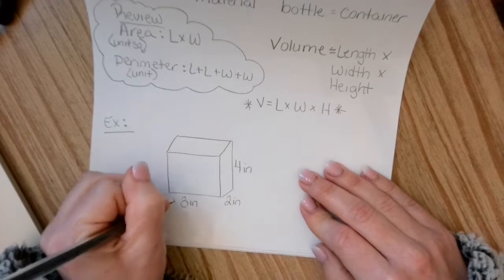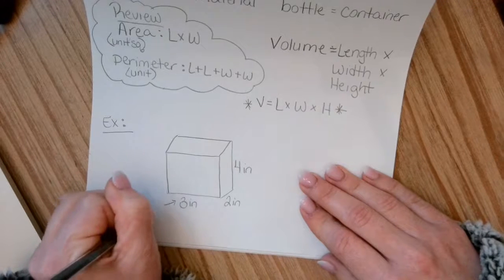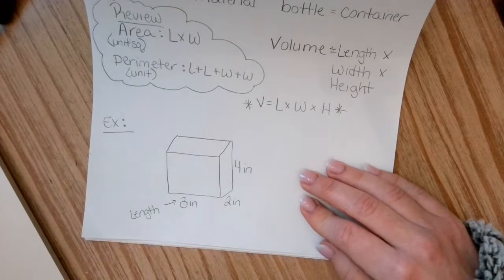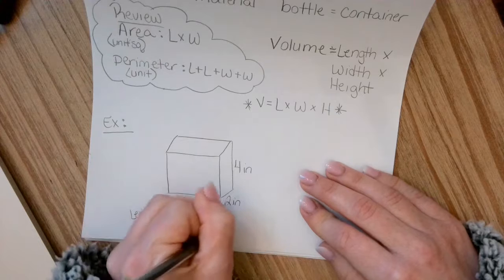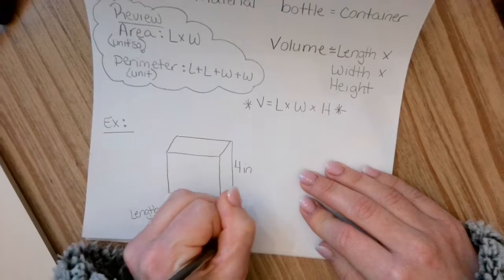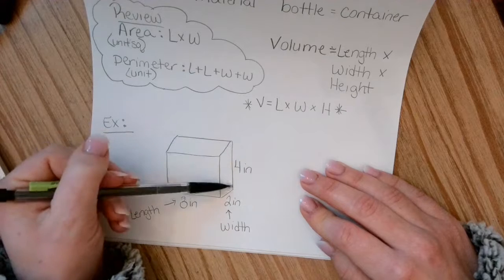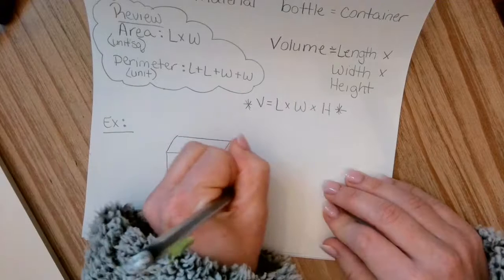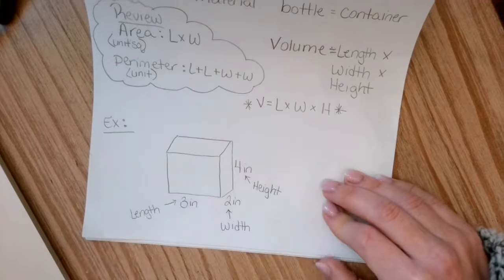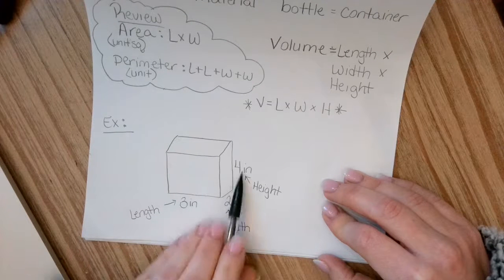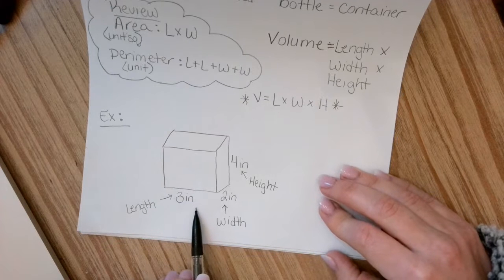So this bottom number right here is always going to be treated as your length. And that's going to matter when you do certain problems. And then the last measurement, which is how tall the cube is, it's going to be your height. And all of these measurements will be given to you in a problem. So all you have to do now is just multiply them. And it's as simple as that.